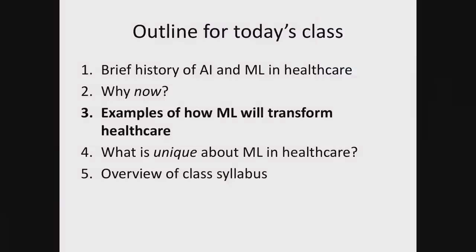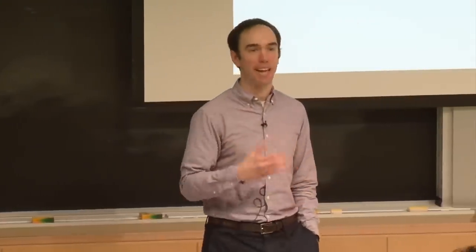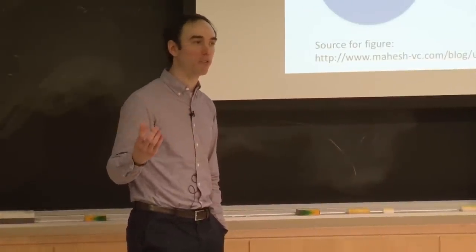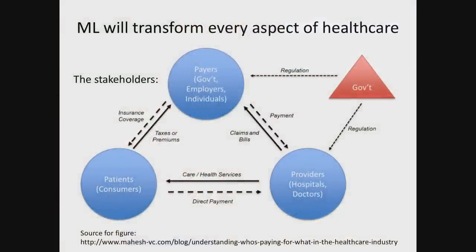Now let's talk about some examples of how machine learning will transform healthcare. First, let's lay out the landscape and define some language. There are several different players: patients and consumers; doctors, nurses, community health workers — providers; and payers. Consumers pay premiums to a health insurance company, which is then responsible for payments to providers for services to patients. In the US, payers are both commercial — like Cigna, Aetna, or Blue Cross — and governmental.